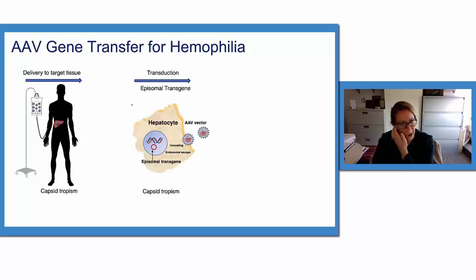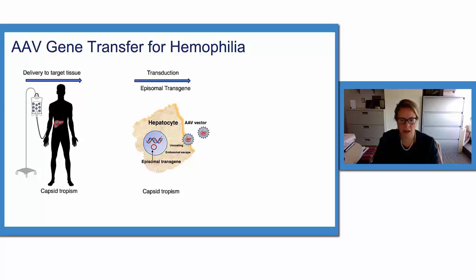The actual transduction and achieving an episomal transgene — the process involves transduction of your cell of interest, in our case hepatocytes. The transgene is maintained predominantly episomally, meaning it predominantly does not integrate into the host DNA.